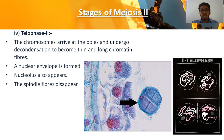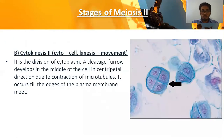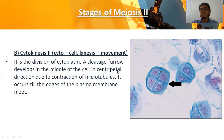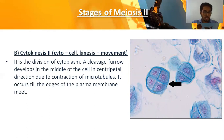Soon after telophase two, the cell enters cytokinesis two. 'Cyto' refers to cytoplasm and 'kinesis' refers to division — it is the division of the cytoplasm. A cleavage furrow develops in the middle of the cell in a centripetal direction, meaning from the periphery towards the center. This cleavage occurs due to contraction of microtubules inside the cell, continuing until the edges of the plasma membrane meet, completing the meiotic cell division.